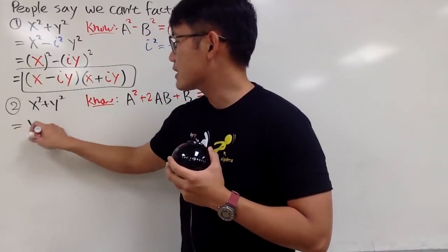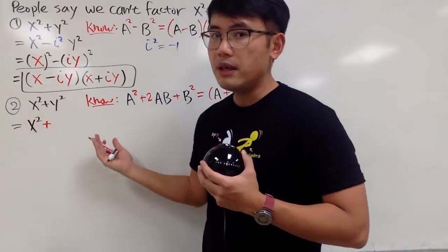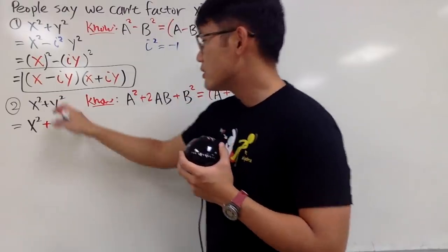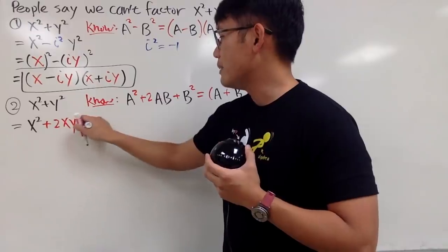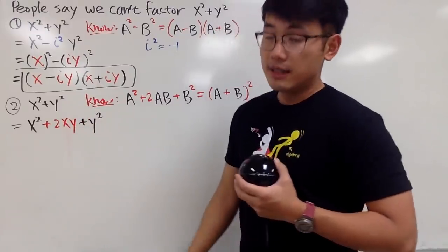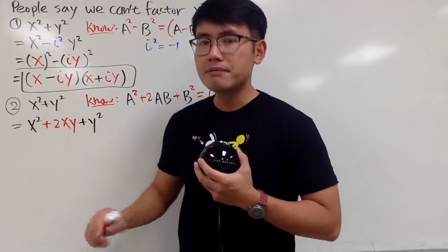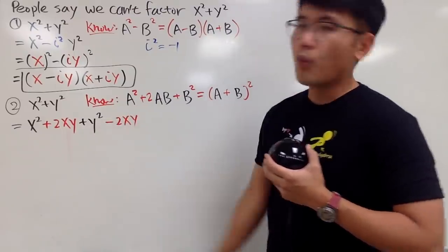Here we have x squared, and let me just put a plus 2ab, and of course, in this case, the a is the x, and the y is the b, right? So, we can just put down 2xy, and we have the plus y squared after that. That's very nice. But, of course, this is no longer the same as that. It's okay, because we can just go ahead right here, and then put down minus 2xy.